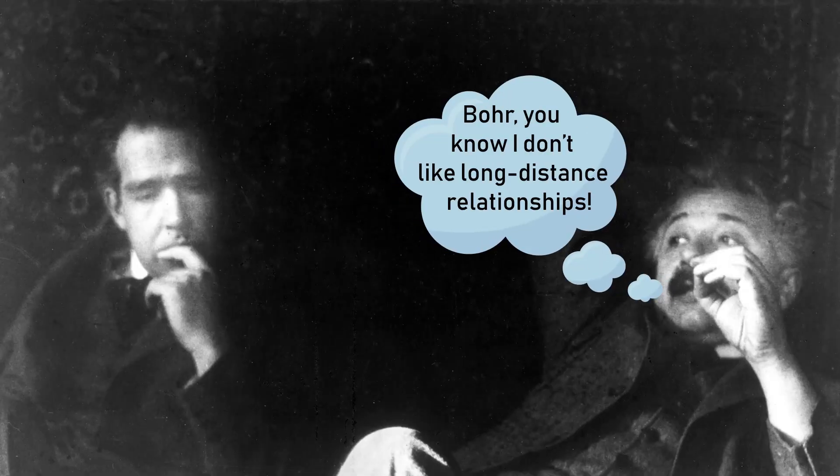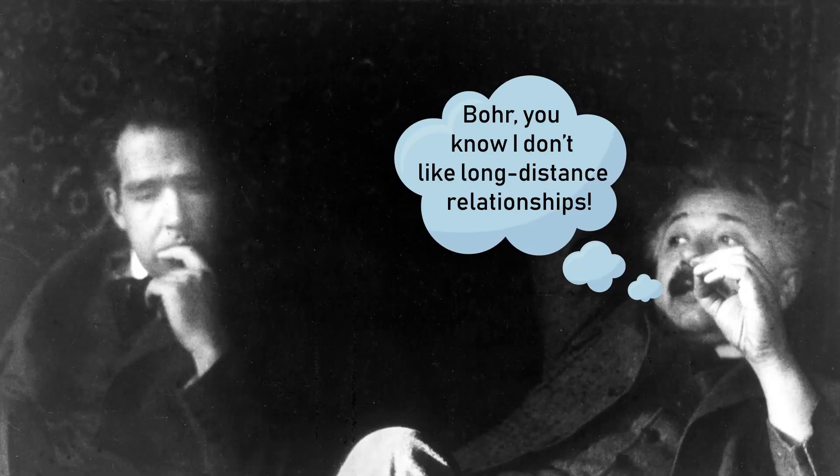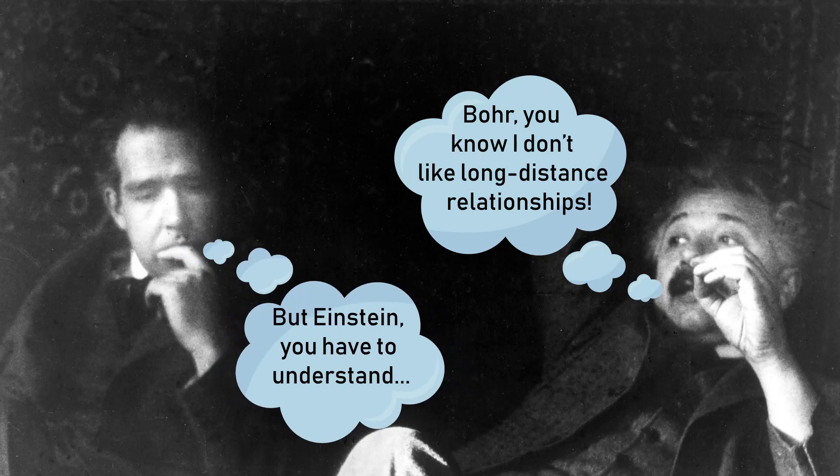Some might think this is a cute long-distance relationship, but Einstein thought it violates special relativity, as no information can travel faster than the speed of light. This would lead to the famous EPR paper, in which Einstein claimed that the particles had hidden variables that contained information on exactly what measurements to give. You can see that Einstein is kind of skeptical of their relationship. This seemed to resolve Einstein's dilemma, but is it true?